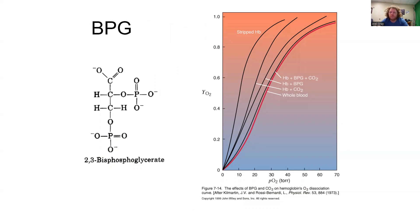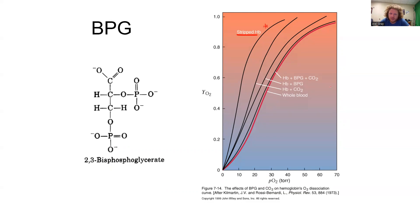To illustrate how BPG impacts oxygen binding, consider this graph. The first line is stripped hemoglobin — purified hemoglobin in a buffered solution with essentially nothing else. Its p50 is about 12 torr.